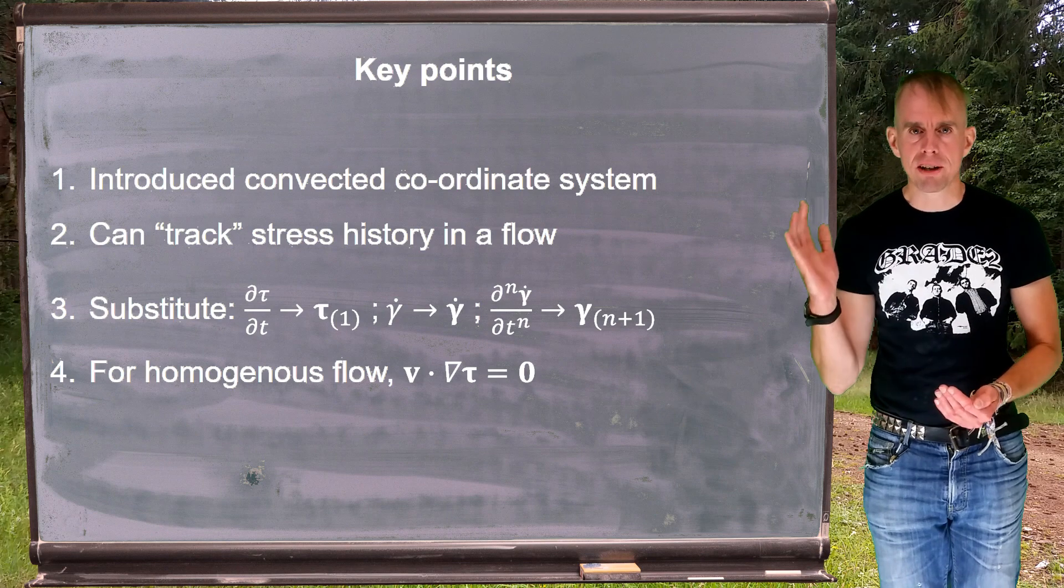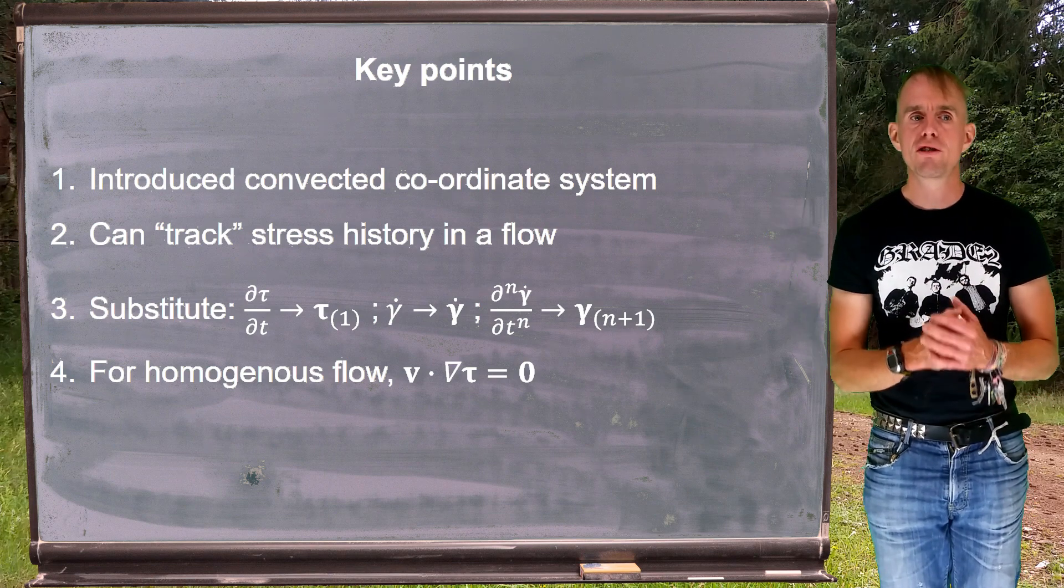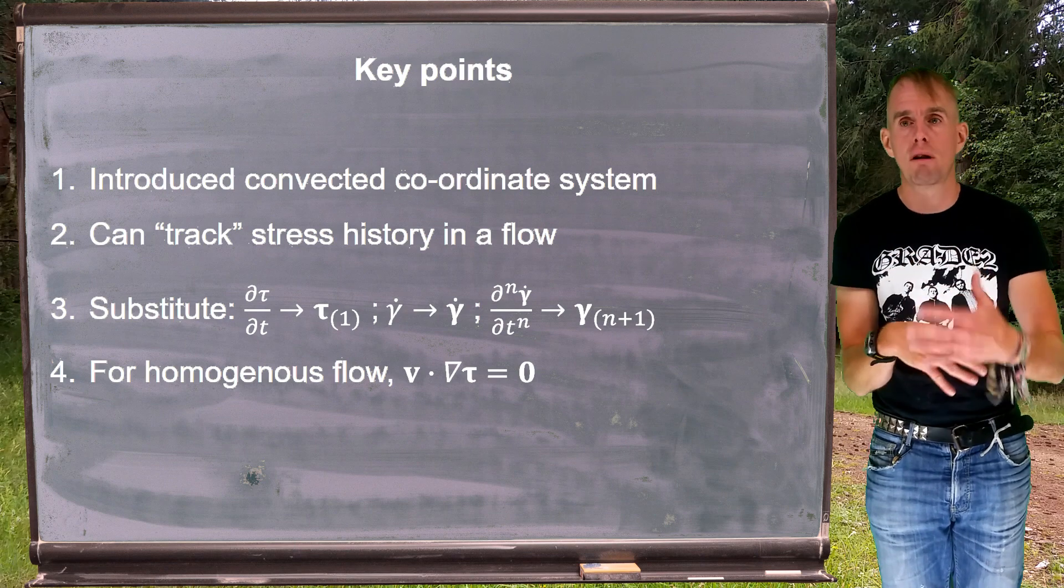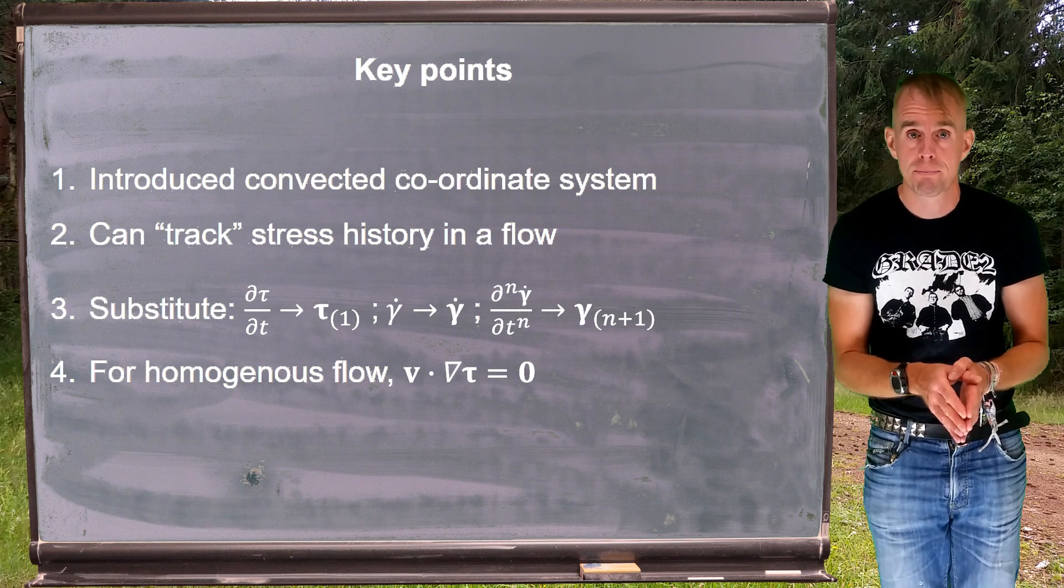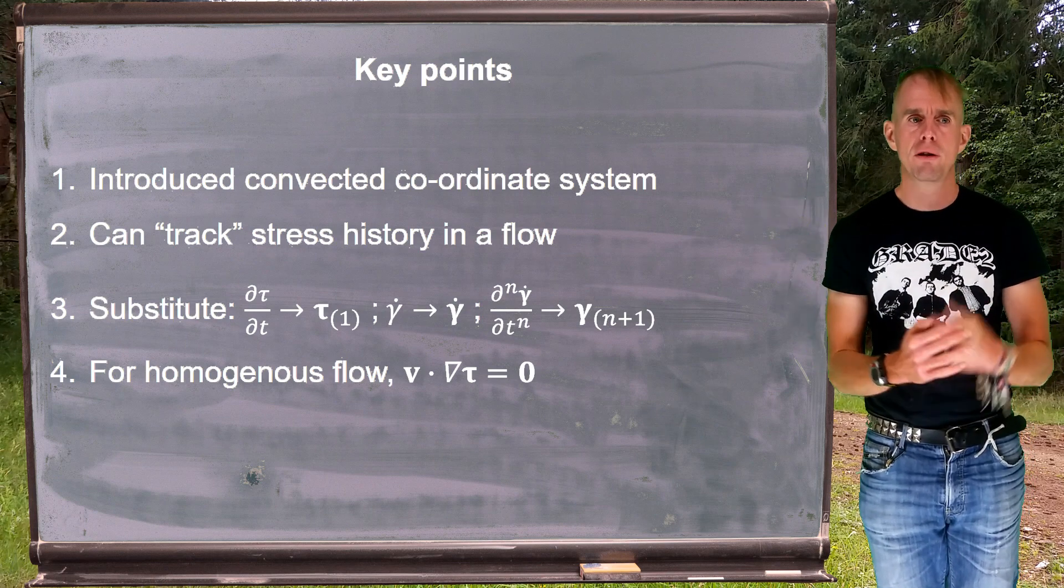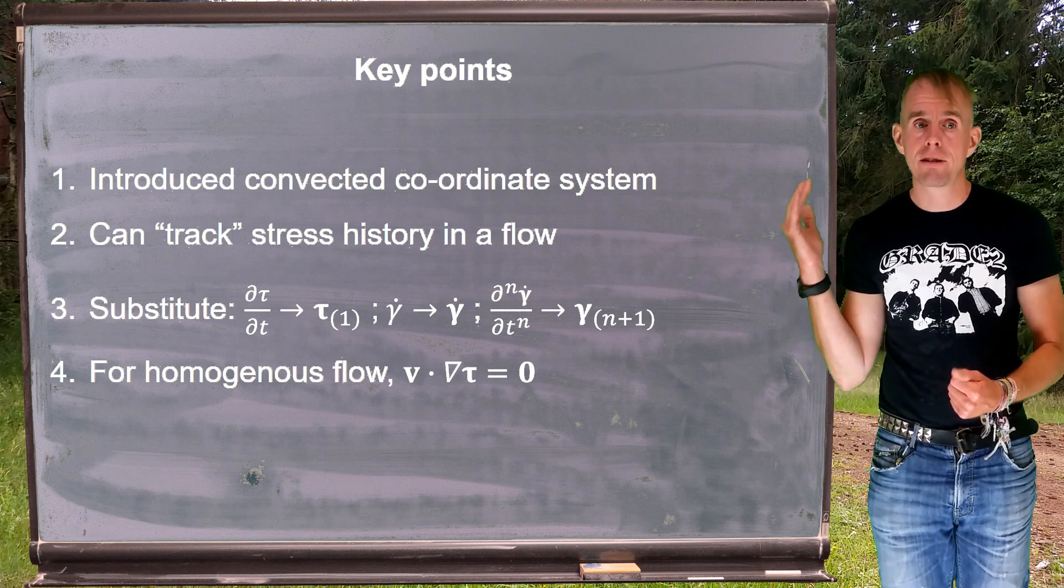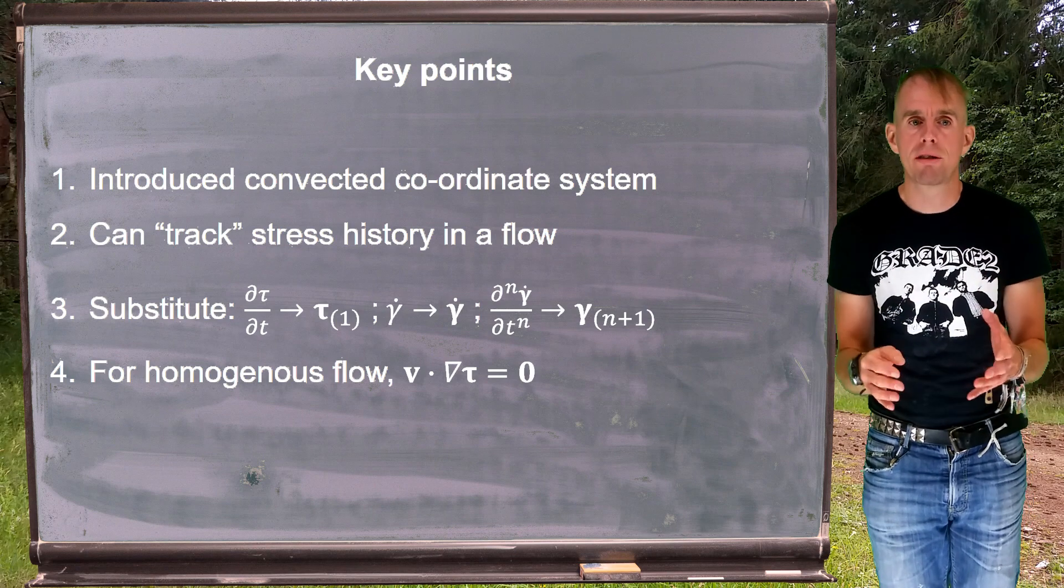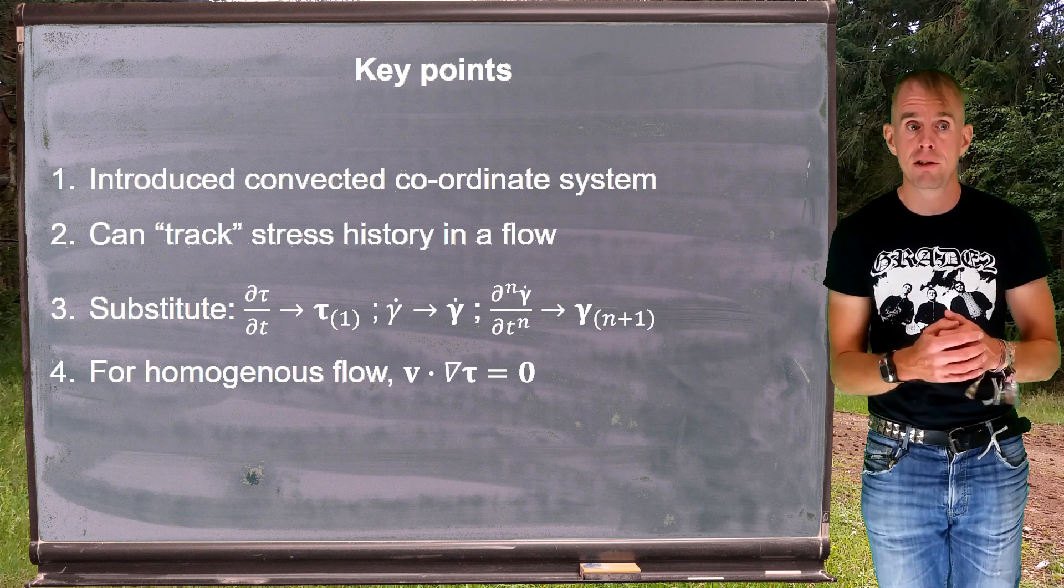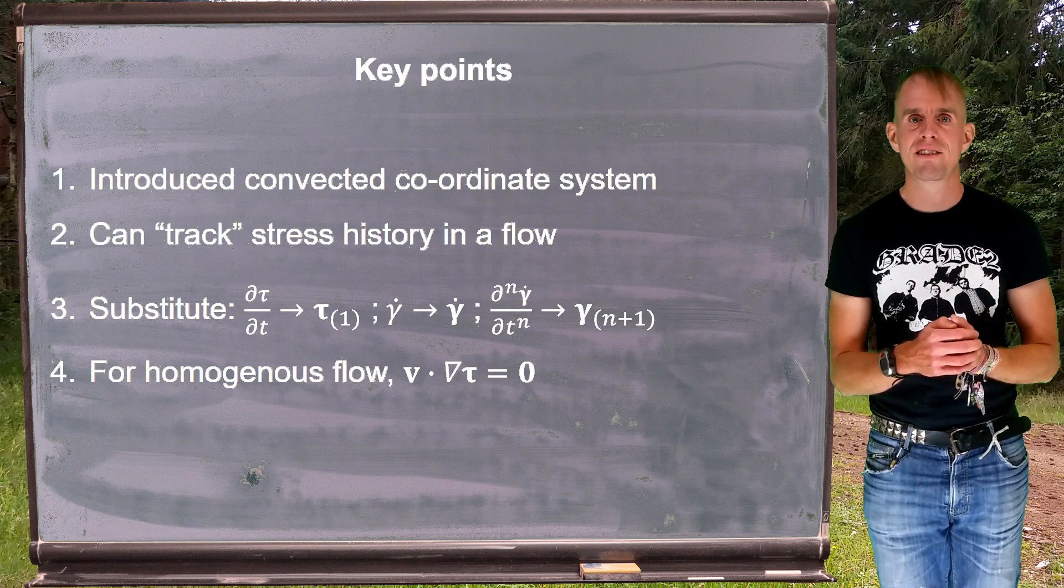Let's summarise some key points. What we've done is to introduce a new coordinate system. It's a convected coordinate system, one that deforms with the flow. Using this concept, we can track very readily the stress history of a single element of a constitutive model. And so we can accurately describe what the deformation history has been, hence what its current state of stress is now. The way in which we derive an upper-convected model is simply by substitution of the upper-convected derivative. So partial d tau by dt becomes tau subscript brackets one. Gamma dot scalar becomes gamma dot tensor. And the nth time derivative of gamma dot becomes the n plus 1th upper-convected time derivative of strain, for which we've seen a definition. We've got this important simplification that we will always use for our purposes, which allows us to simplify what the upper-convected stress derivative is, because a homogenous flow has v dot grad tau equal to 0.